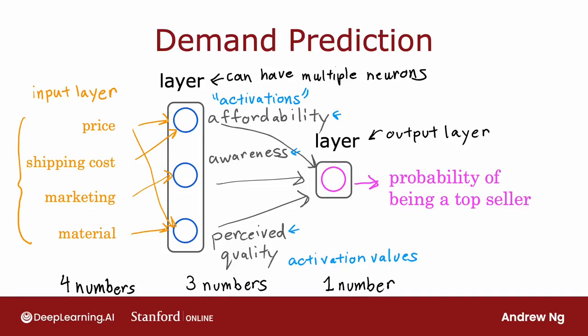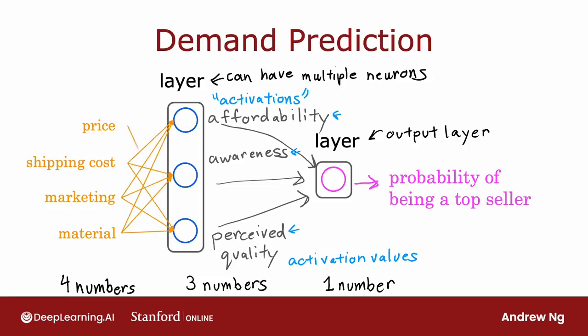Now, there's one simplification I'd like to make to this neural network. The way I've described it so far, we had to go through the neurons one at a time and decide what inputs it would take from the previous layer — for example, we said affordability is a function of just price and shipping costs, and awareness is a function of just marketing. But if you're building a large neural network, it'd be a lot of work to manually decide which neurons should take which features as inputs. The way a neural network is implemented in practice, each neuron in a layer will have access to every feature from the previous layer. This is why I'm now drawing arrows from every input feature to every one of these neurons in the middle.